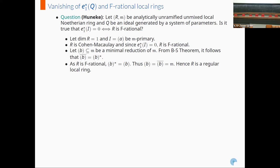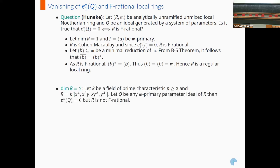In higher dimensions — dimension 2 itself — we have a counterexample. Let K be a field of prime characteristic P greater than or equal to 3, and R be the power series ring in K[[x⁴, x³y, xy³, y⁴]]. Let Q be any primary parameter ideal of R. Then it turns out that E1-star of Q is equal to zero, but the ring is not F-rational.